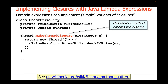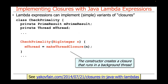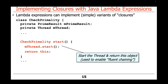The method called makeThreadClosure is a factory method that creates the closure at issue here. The CheckPrimality constructor takes the value n of type BigInteger, calls makeThreadClosure passing in n, and stores the result in the mThread field. The start method starts the thread and then returns 'this' in order to enable fluent chaining — you'll see examples of that when we look at the code in more detail.